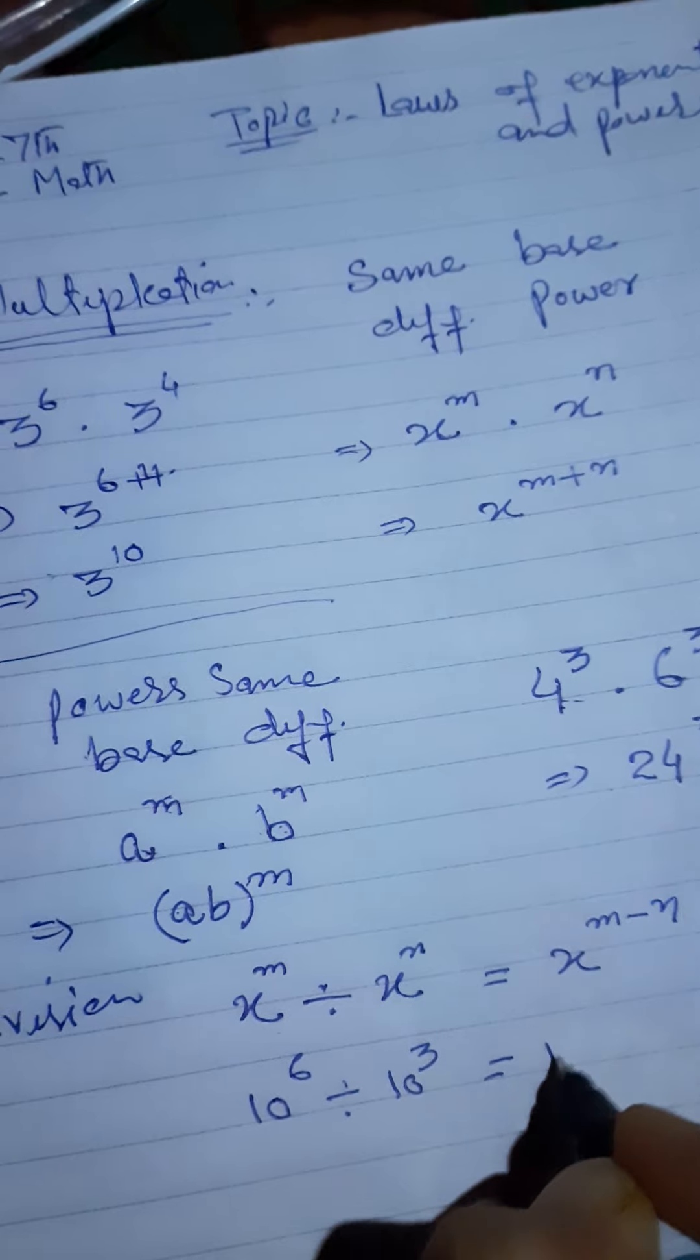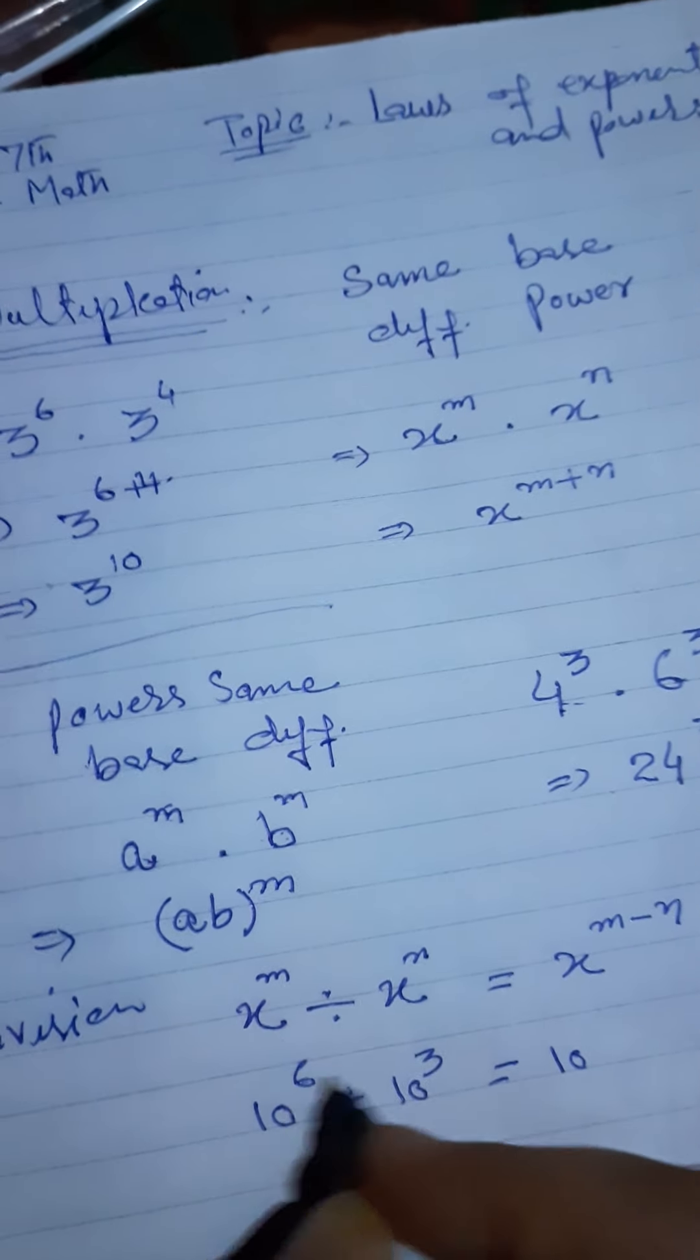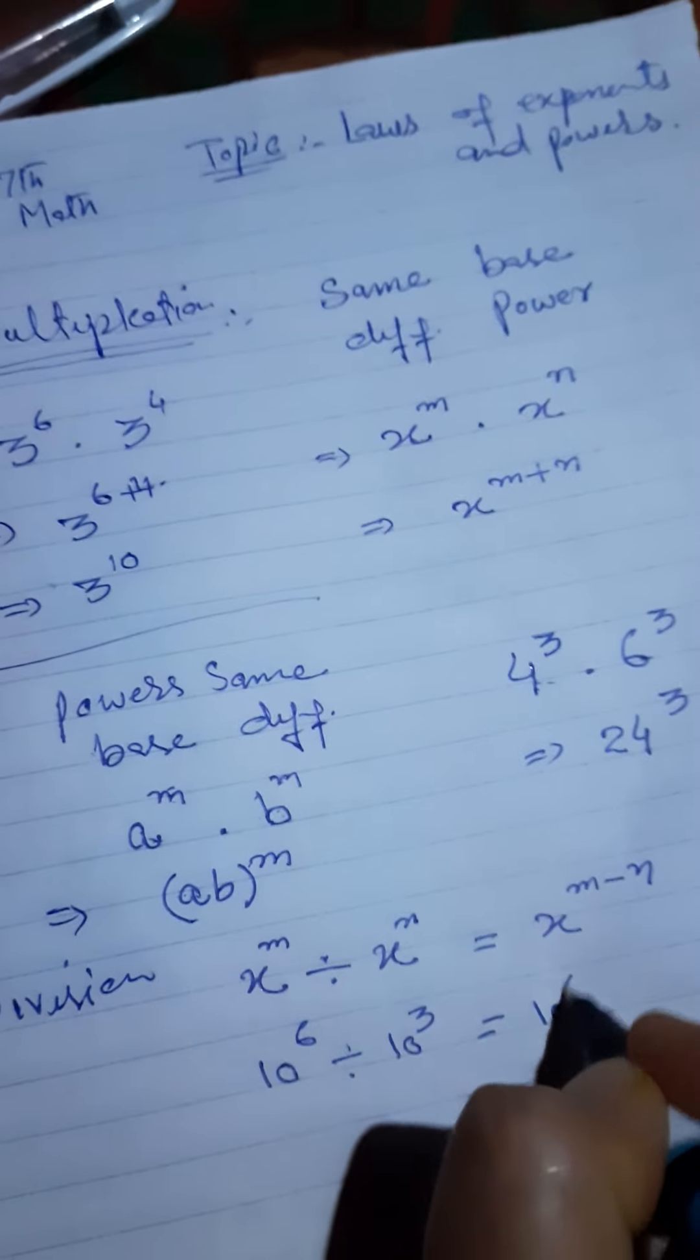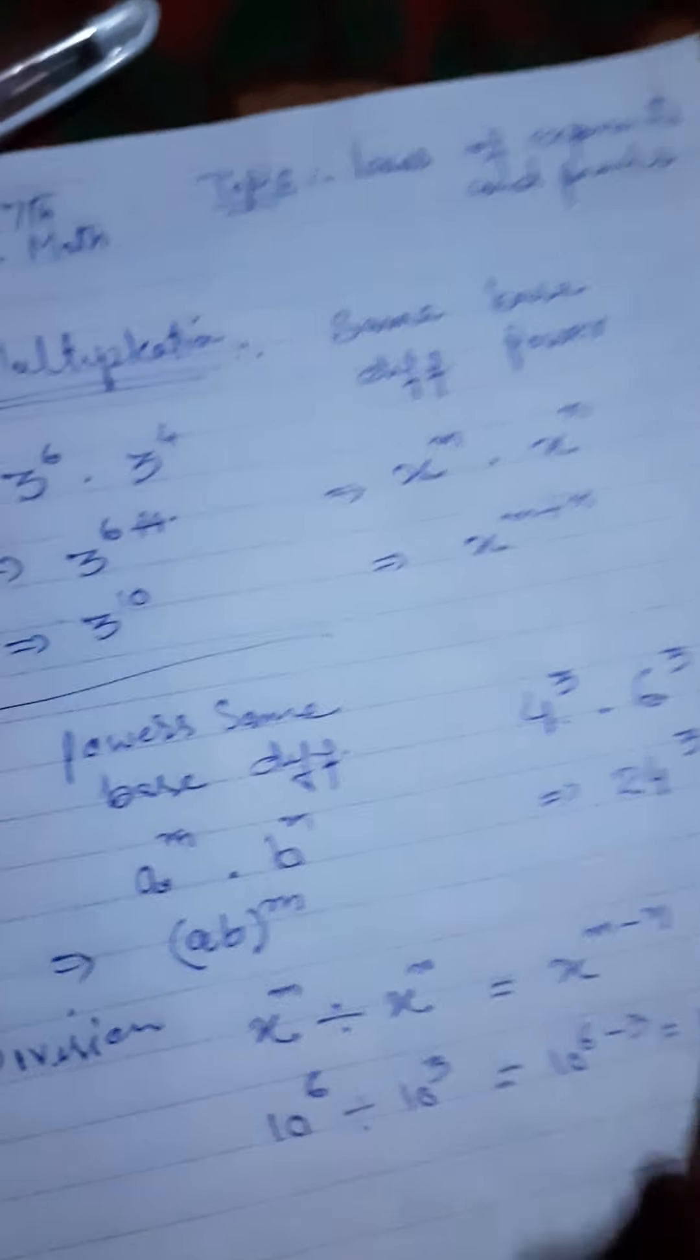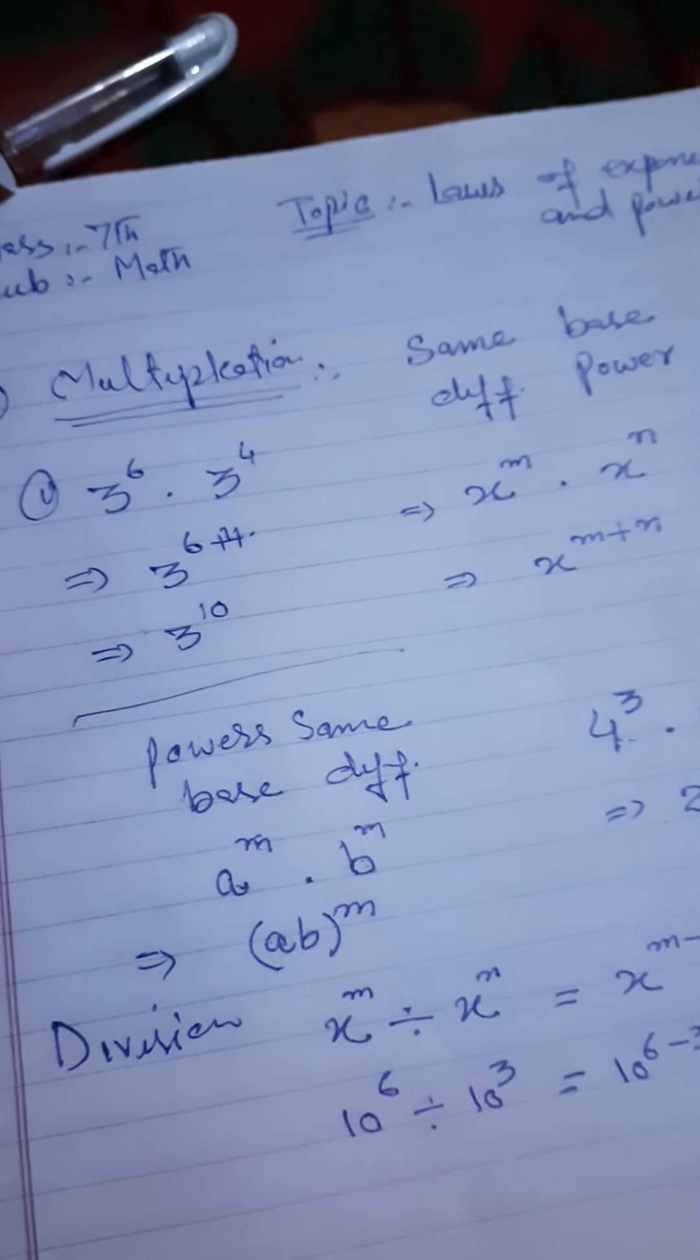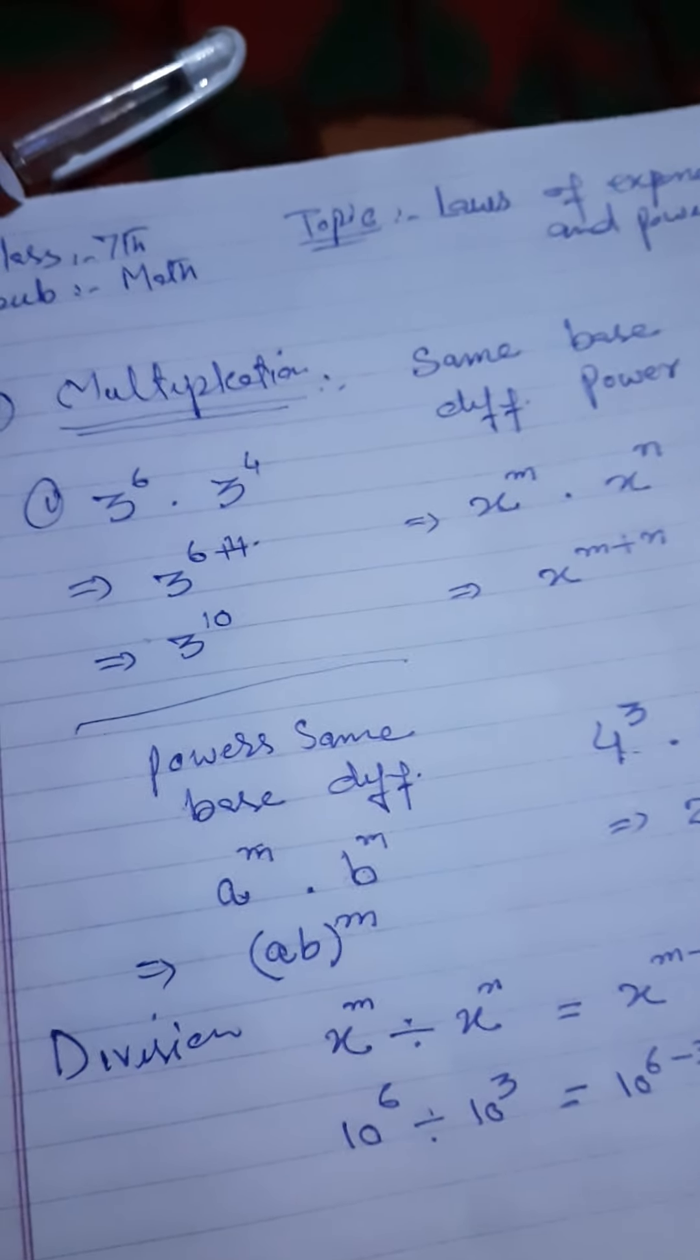For example, 10 raised to power 6 divided by 10 raised to power 3. The base is the same, so 10 raised to power 6 minus 3, which is 10 raised to power 3. In division, when bases are the same, power should be subtracted.